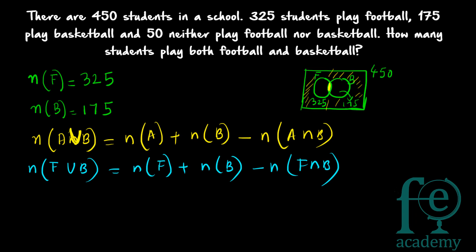So N(F ∪ B) — number of students participating in either football or basketball — equals N(F) + N(B) − N(F ∩ B). Now, total students are 450 and 50 are neither playing football nor basketball, so N(F ∪ B) = 450 − 50 = 400 students play either football or basketball.